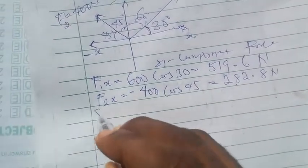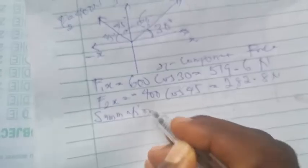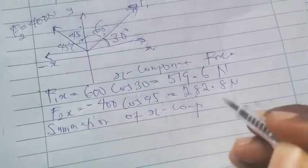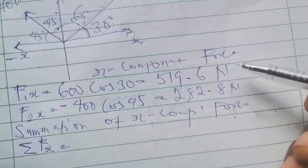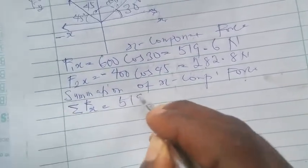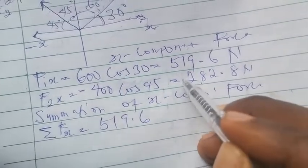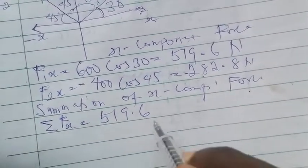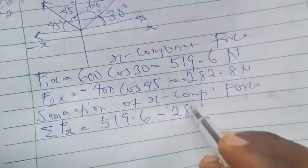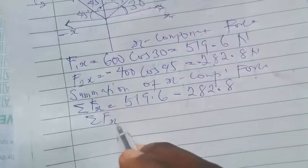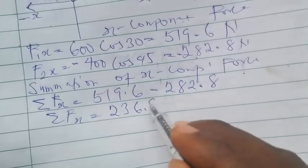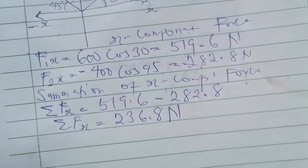So the next thing we'll do is to find the summation of horizontal forces, summation of X component force. We simply add the two forces that we have. First is 519.6, minus 282.8. So we'll have the summation of X, it's now equal to 236.8.